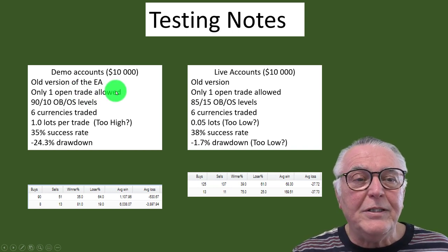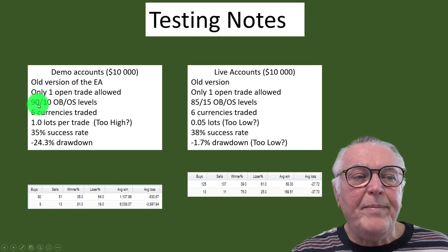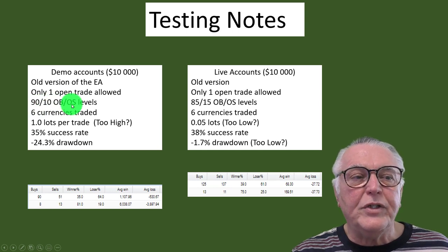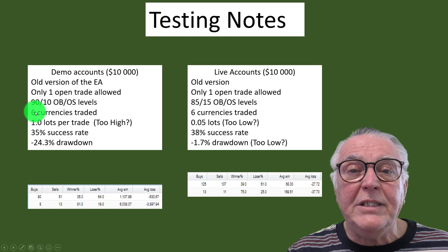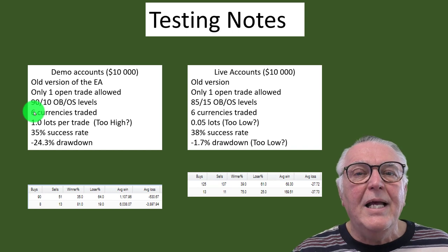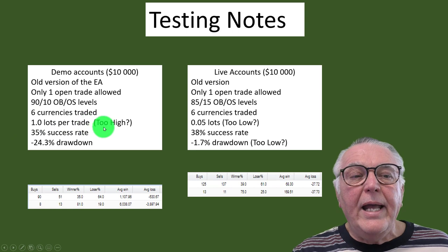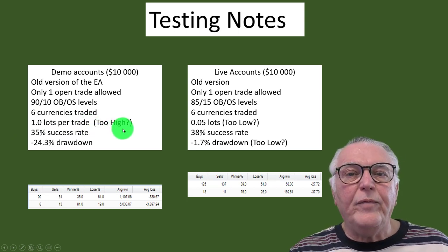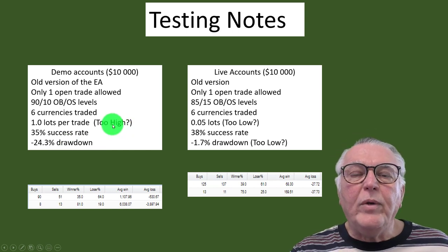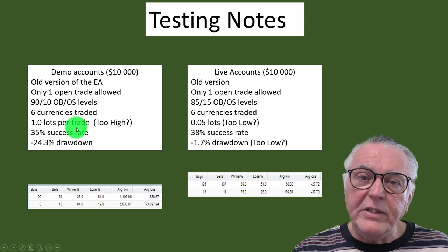On your screen you can see testing notes from the results on the live and monitoring accounts. The monitoring accounts use the old version and only open one trade at a time, so you can actually increase results tremendously. The demo accounts use very strict entry and exit criteria: 90 overbought, 10 oversold. Six currencies were traded. A main lot sizing of 1.0 was used, and the question was whether that was too high — I think because of the drawdown situation it was a little high and we could probably bring that down to 0.1 for more reasonable risk control.